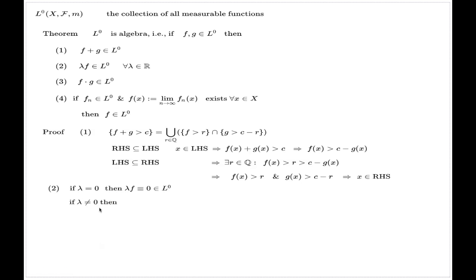In case lambda is non-zero we have to argue differently. We have to mention something like this: that the set lambda f less than c can be written like so, and we do have the ability to do that because lambda is non-zero now, and this is a measurable set because f was originally measurable. And that finishes the proof of part 2.